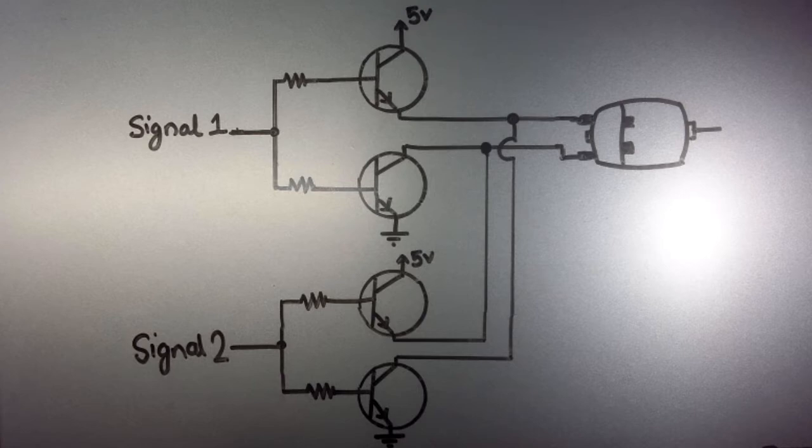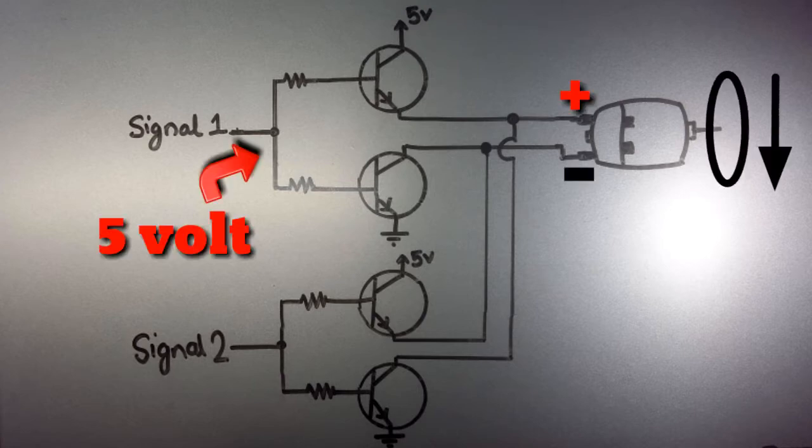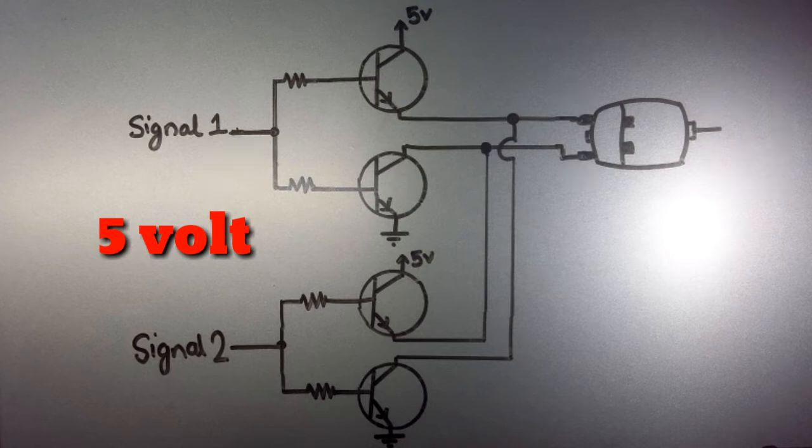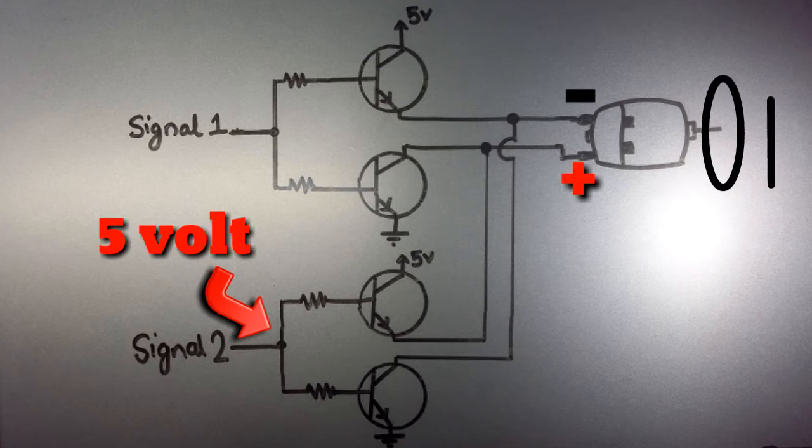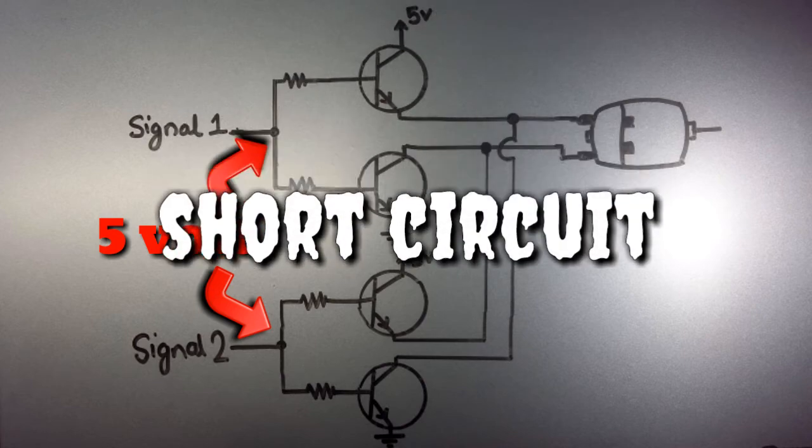Now when you provide a signal of 5 volts to the upper half transistors, the motor spins in one direction. And when you provide a signal of 5 volts to the lower half transistors, the motor spins in the other direction. But make sure you never give positive signal to both halves at the same time, which results in a short circuit.